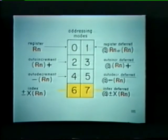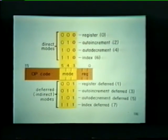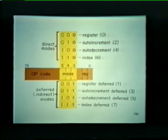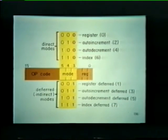We've now described the symbols used for all eight addressing modes. The equivalent binary codes are shown here. These binary codes form bits 3, 4, and 5 of our 16-bit instruction word. Notice that bit 3 defines whether we're using a deferred addressing mode or a direct addressing mode: a binary 0 denotes a direct addressing mode, and a binary 1 designates a deferred mode.